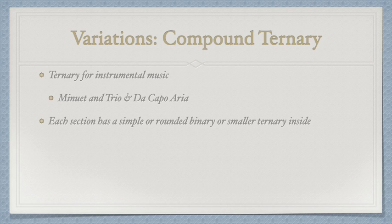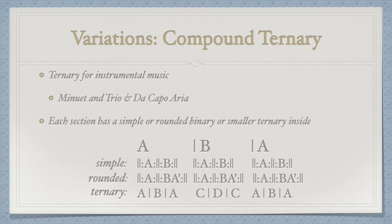Another variation of ternary often found in instrumental music is called compound ternary. We call it compound because within each section, a smaller form can be found — such as simple or rounded binary, or even a ternary inside each of the sections. We often see these play out in forms like minuet and trio or a da capo aria. In both cases, the repeats are ignored when we have the reprise of the A section, as we would in a traditional minuet and trio.